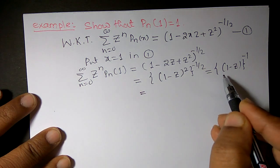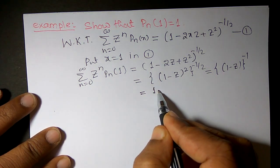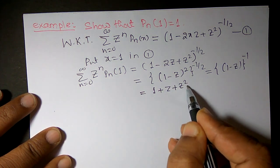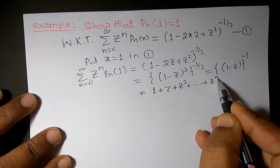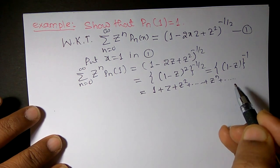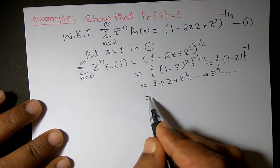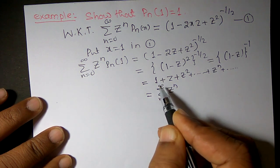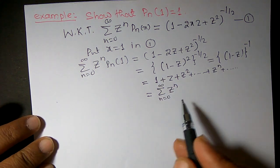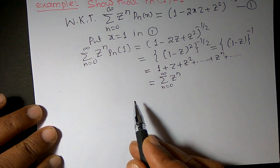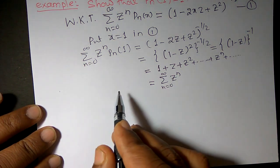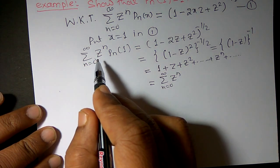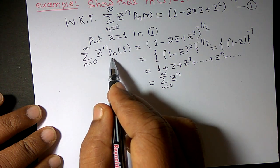If I expand (1 - z)^(-1) using the binomial theorem, I can obtain 1 + z + z² + ... + z^n + ... which is the same as summation of z^n, n varies from 0 to infinity. Now I want to equate the coefficients of z^n. On the right hand side, the coefficient of z^n is 1.